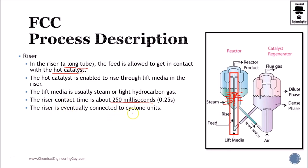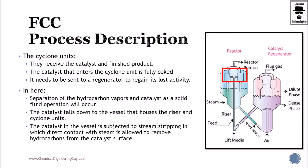The riser is eventually connected to the cyclone units in which we have most of the interaction. So in the cyclone units, they receive the catalyst and finished product. So you can see here there's interaction between both areas. The catalyst that enters the cyclone unit is fully coked, so it must be recovered. In here, the separation of the hydrocarbon vapors and catalyst as a solid are going to be separated. The catalyst falls down to the vessel that houses the riser. So this is essentially spent catalyst.